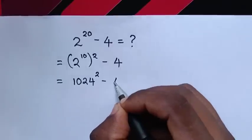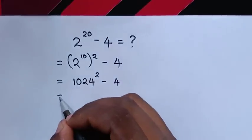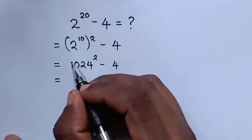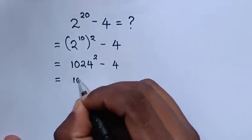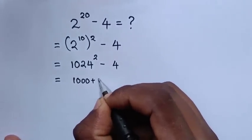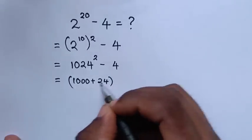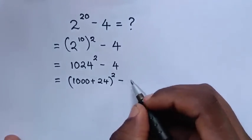This will equal 1024, same as 1000 plus 24 bracket square, minus 4.